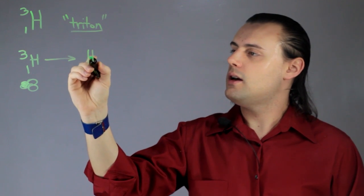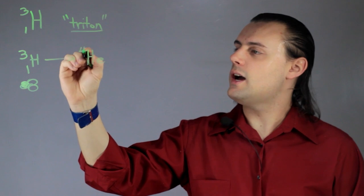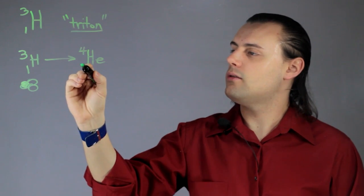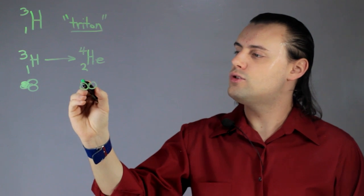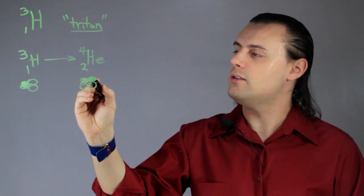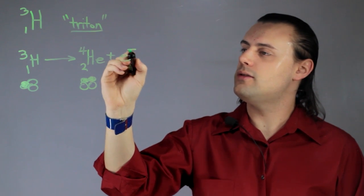It decays into a helium nucleus which has four nucleons, two of them being protons, so you have two neutrons and two protons, and a beta particle, in this case an electron.